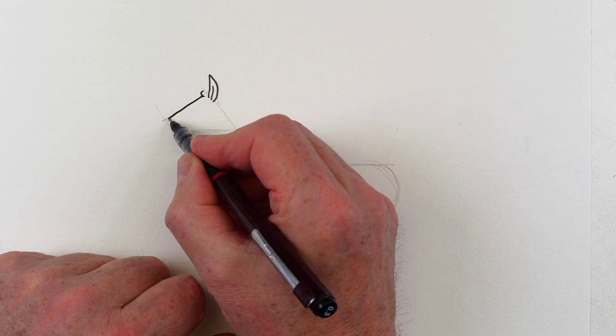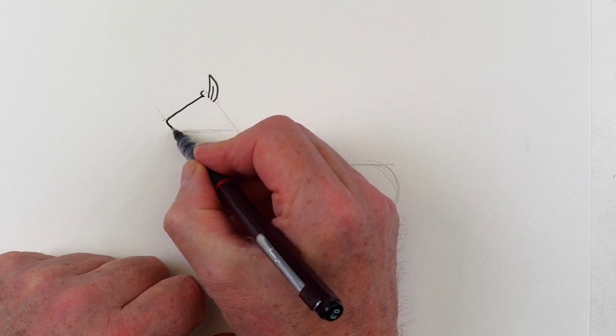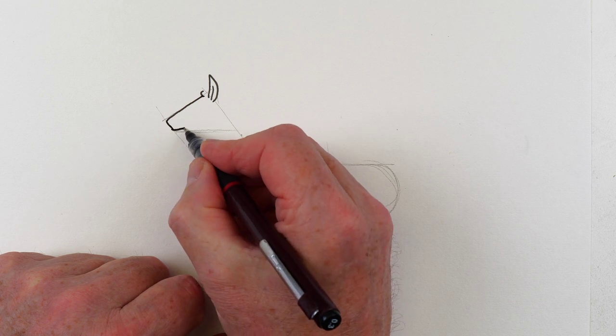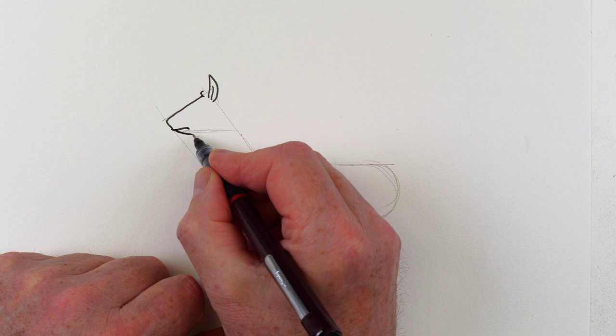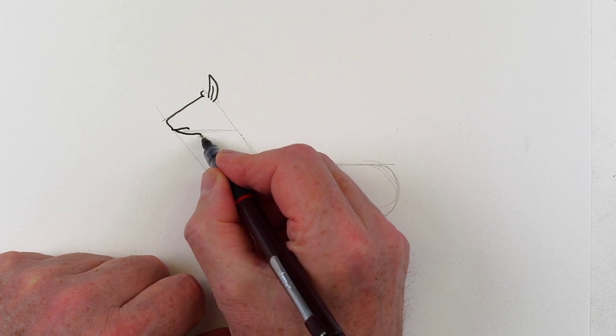We can draw, this is going to be the nose coming down like that. And then we want a kind of a chin like that.